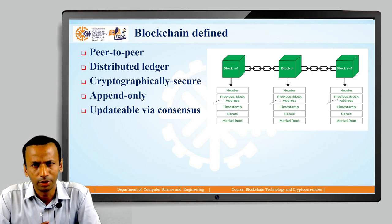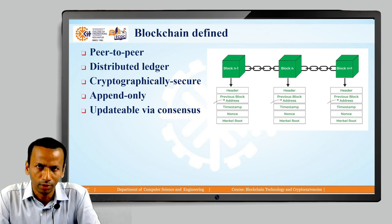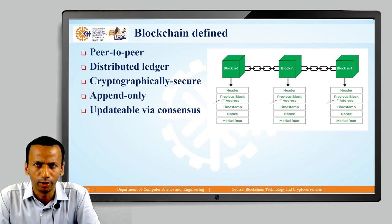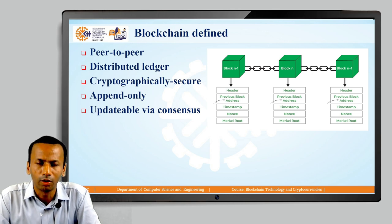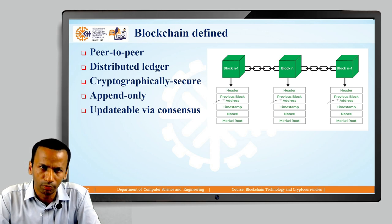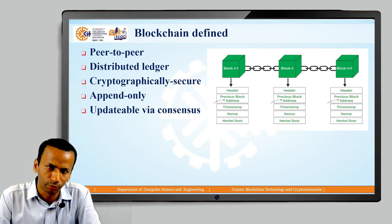Next is updatable via consensus. When a new transaction is initiated by any node in the blockchain network, that transaction needs to be confirmed and recorded in the blockchain. Just because you initiated it does not mean it will be recorded — it is based on the consensus algorithm, where all nodes in the network are involved. Only if all nodes agree is the transaction confirmed and the block appended to the blockchain.